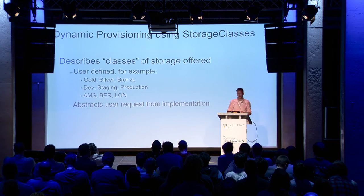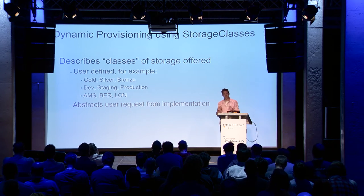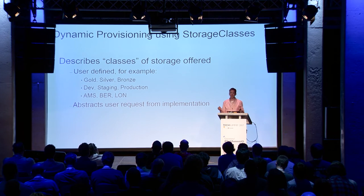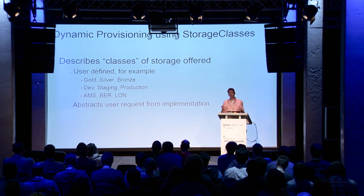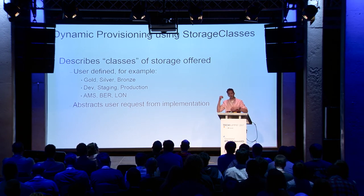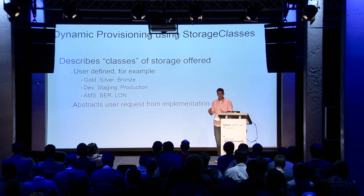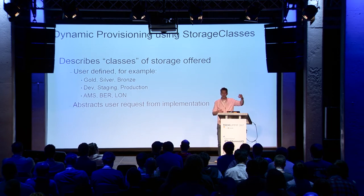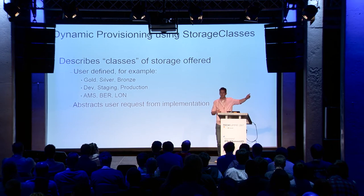That's why Kubernetes developed dynamic provisioning and implemented something called storage classes. A storage class lets the Kubernetes administrator abstract back-end storage resources behind a class, and users consume the class — more abstraction. For example, you could have a gold class of storage for on-premise NetApp storage and a gold class in Google Cloud equating to a high-IOPS volume on their platform.